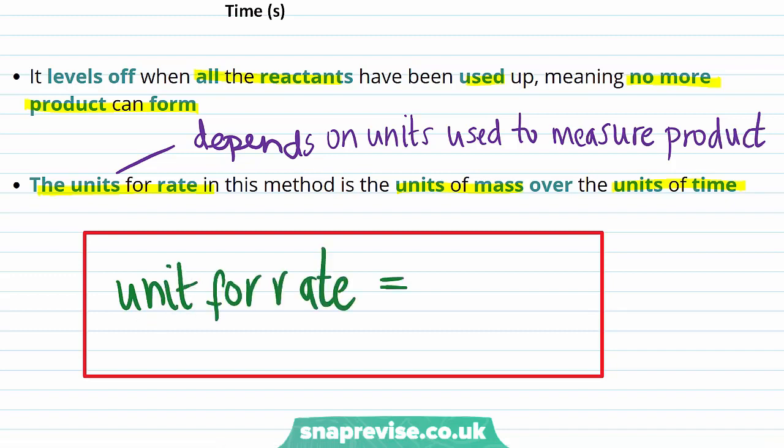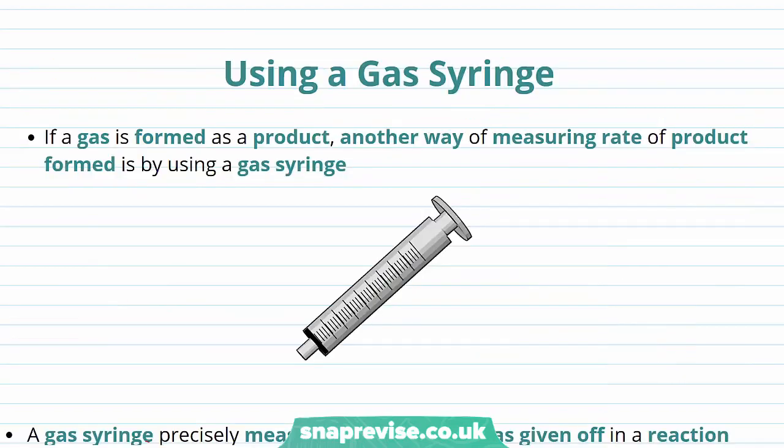So in this case, our units for rate is equal to the units of mass, which is grams, divided by the units of time, which is seconds. So here, the rate is measured in grams per second. You might also see grams per second written as g s to the minus 1, which just means exactly the same thing.